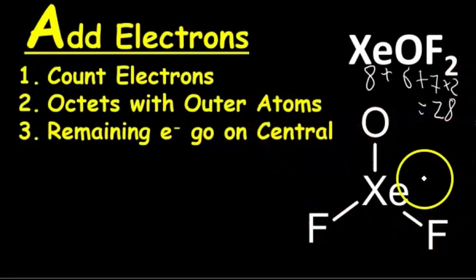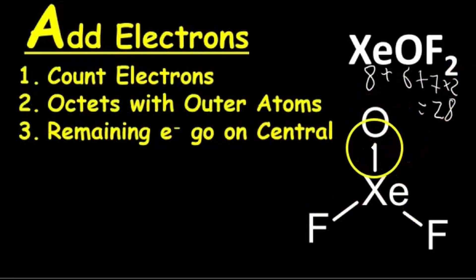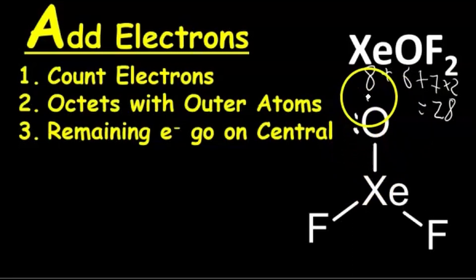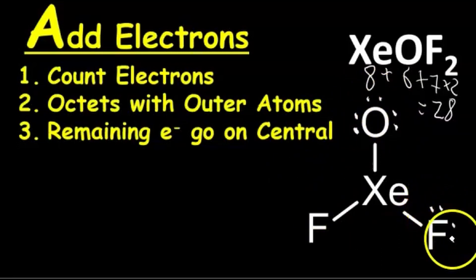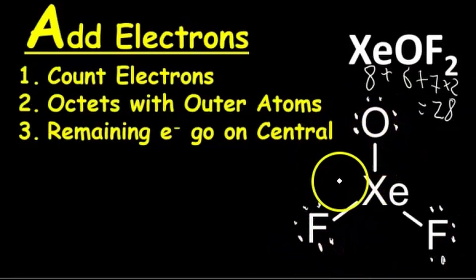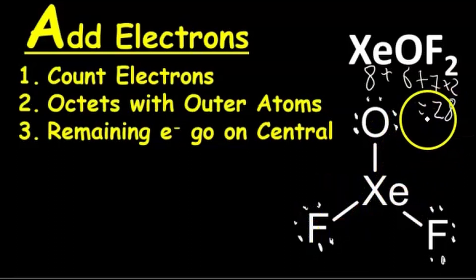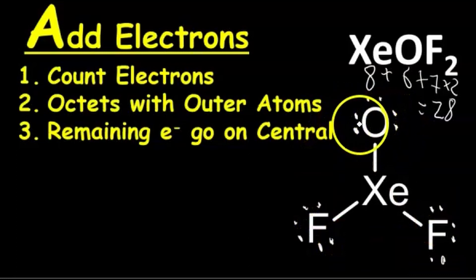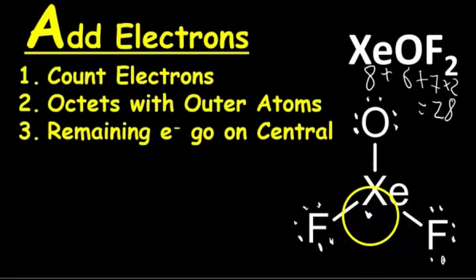We start with the outer atoms to form octets. The oxygen already has two electrons from the bond, so we add six more to complete its octet. Then we form an octet for each fluorine — two electrons in the bond, then add six more to each. Counting all those electrons gives 24. That means we have four more electrons to add. We can't add more to the outer atoms since they already have full octets, so the remaining four electrons go to the central atom, xenon.